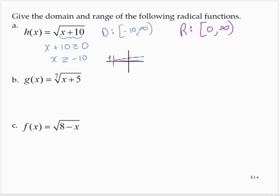g of x is equal to the seventh root of x plus 5. If we have an odd root, the domain and range are all real numbers, unless there are other issues going on with the function in certain contexts or things that you might learn about in a later course. For now, domain is all real numbers, and the range is all real numbers.